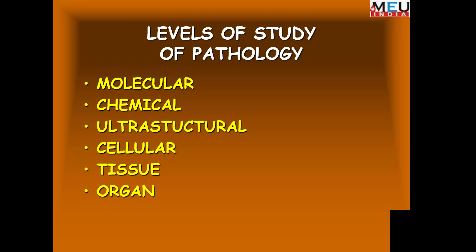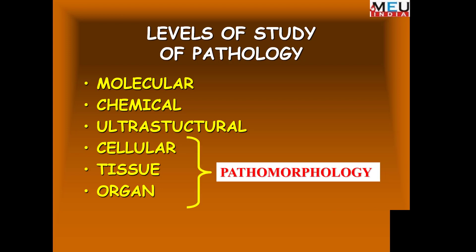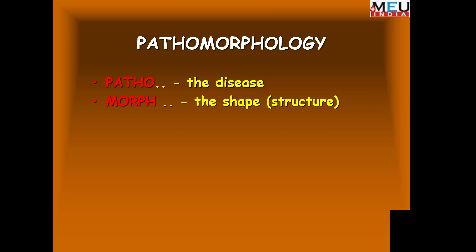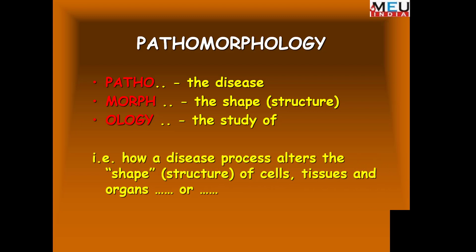There could be changes in the organ, which may atrophy or increase or decrease in size. The changes at the cellular level, tissue level, and organ level are collectively known as pathomorphology — the change in structure. For all practical purposes, what we mainly study in pathology is the pathomorphology, which describes how a disease process alters the shape or structure of cells, tissues, and organs.